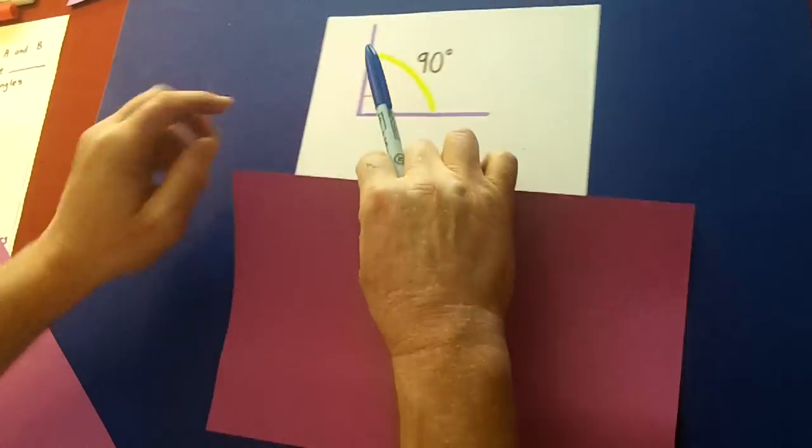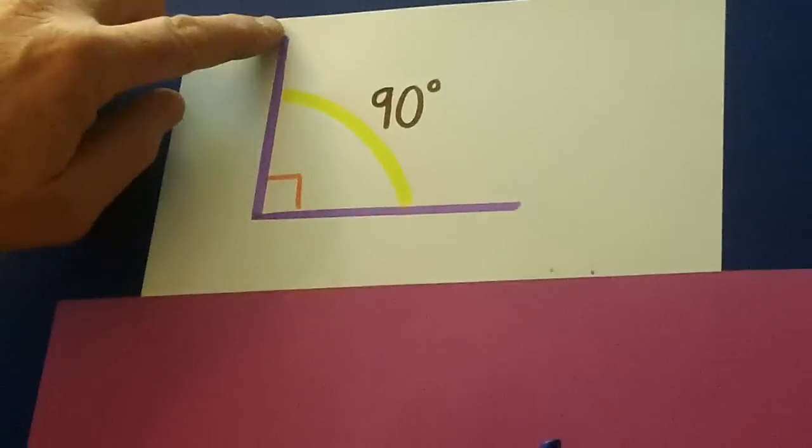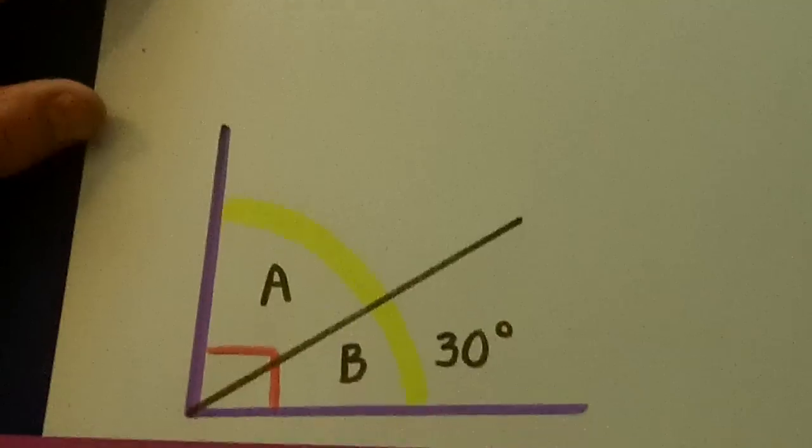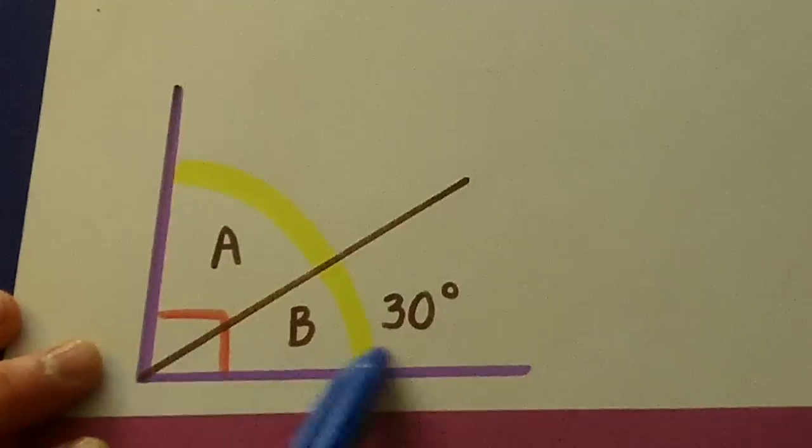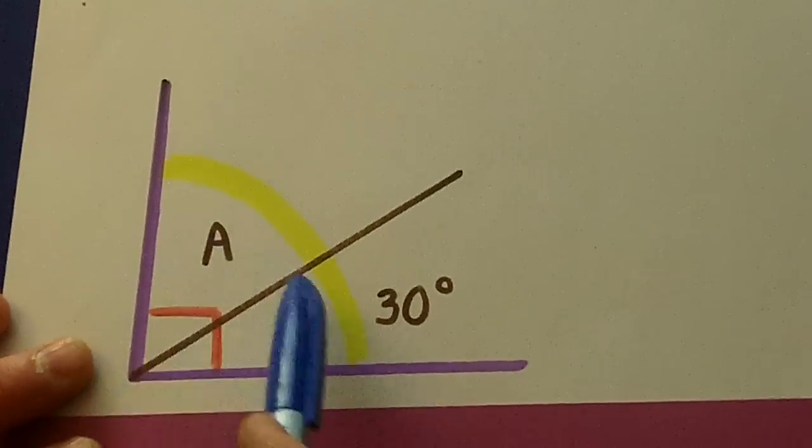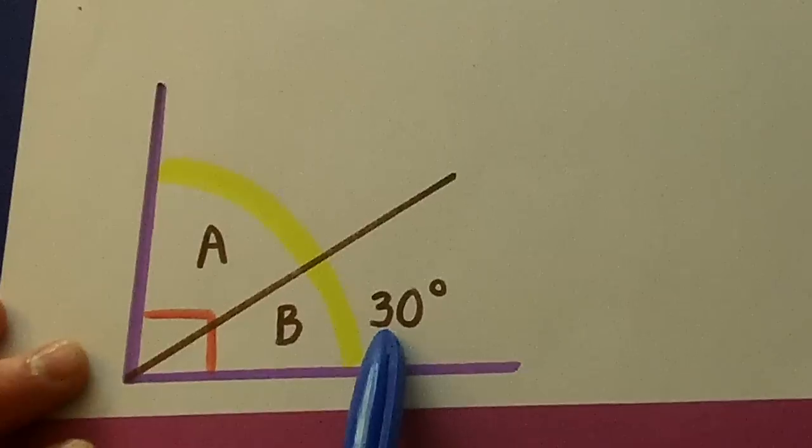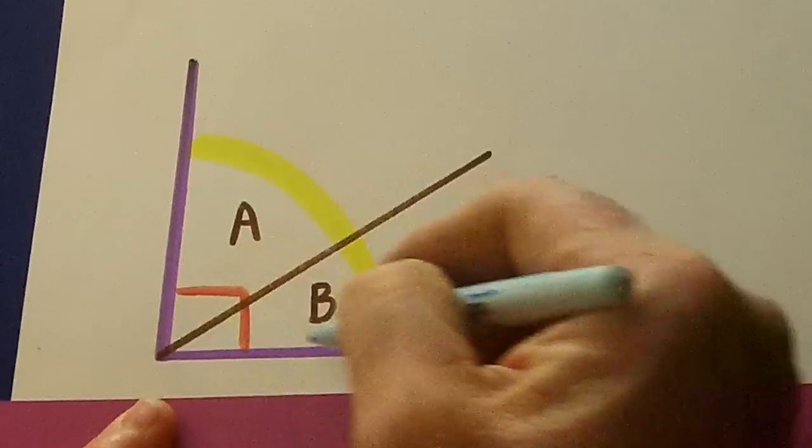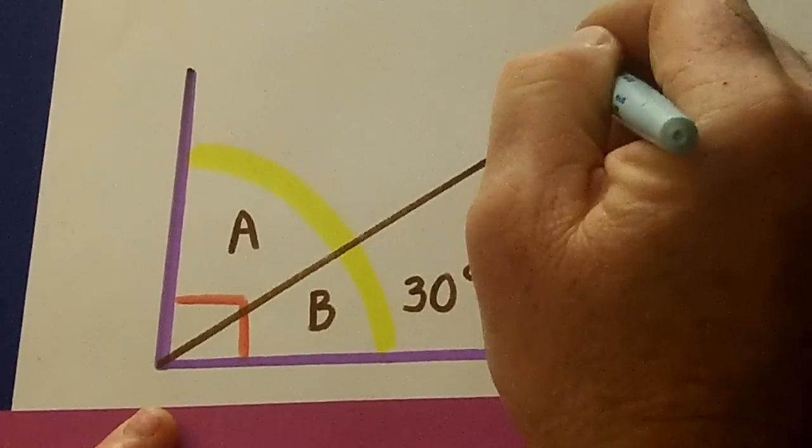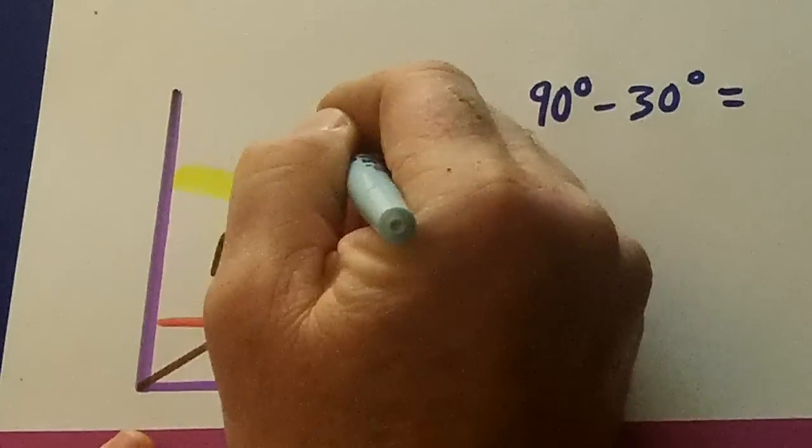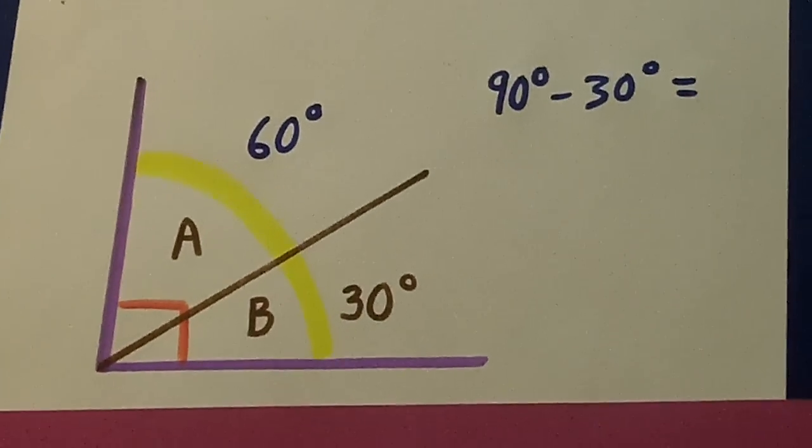Now, let's remember that when we have a right angle, it's 90 degrees, and two complementary angles add up to 90. So here's our first question. What's angle A if angle B is 30 degrees? We simply take this right angle, 90 degrees minus the 30 degrees, equals 60 degrees. Is that easy?